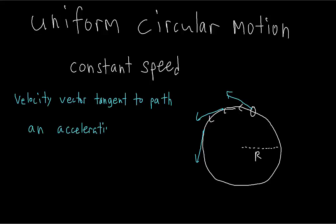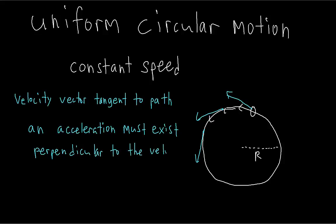If the velocity is changing direction, then there must still be an acceleration. So we have an acceleration on the object that is changing the velocity's direction but not its magnitude. Whenever we have that, we know the acceleration must be perpendicular to the velocity, because if an acceleration is perpendicular to a velocity, then it only changes the direction, not the magnitude of velocity.